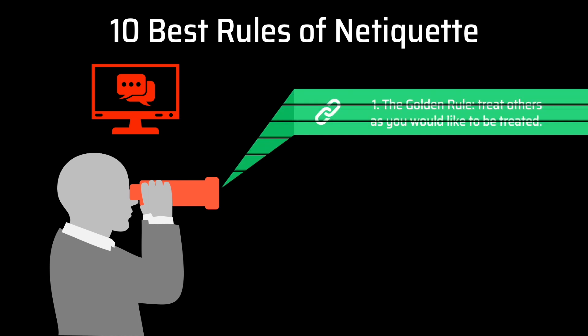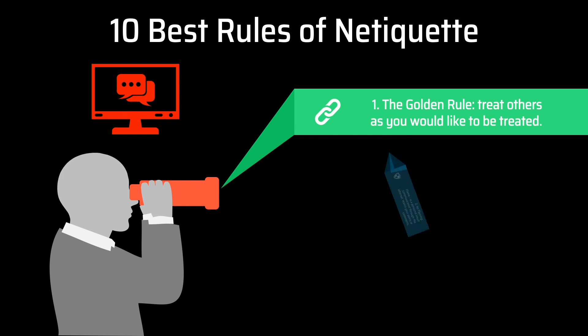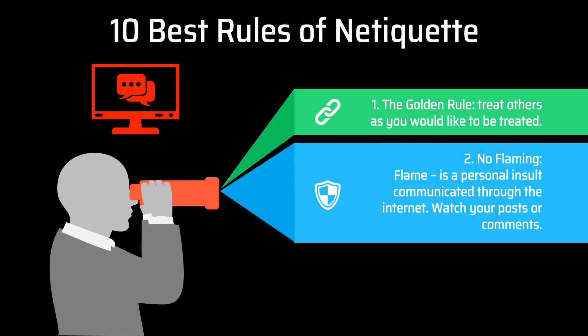Here are the 10 best rules of NITICAT. Number one is the golden rule: treat others as you would like to be treated. Number two, no flaming. A flame is a personal insult communicated through the internet — watch your posts or comments.